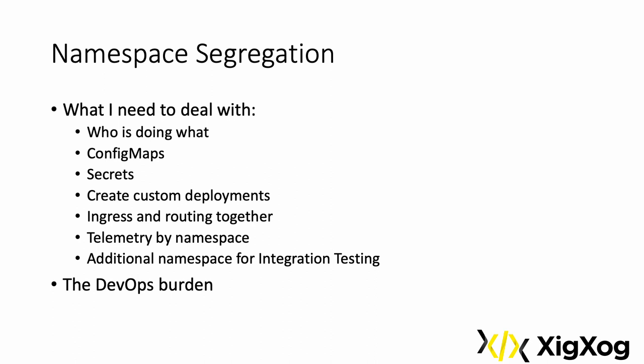Using namespace segregation means we need to determine who's working on what — this is imperative as it dictates how we structure the system. We need to duplicate config maps and secrets, which cannot be shared across namespaces, and remember to copy those resources across namespaces when they change. We need to configure deployments, ingress, routing, and telemetry. Routing requests through different versions of the app can present significant challenges. Each team will be working on different components, and the results of those tests will be dependent on correct configuration.